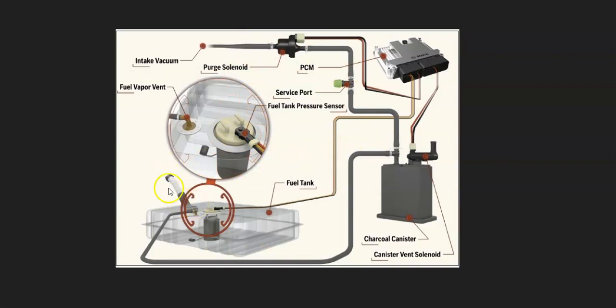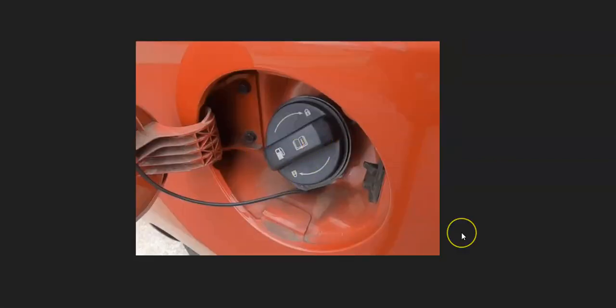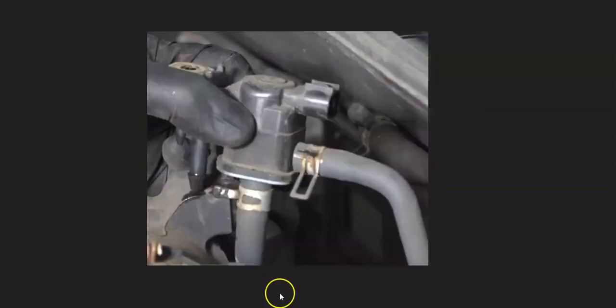The first thing to do with any EVAP code is to go check the gas cap, because the gas cap is part of the EVAP system and if it's not sealing correctly it can cause a leak. Check that it's not cracked and that the inner seal is good. If you do replace it, try to get an OEM original gas cap for your particular Honda, since aftermarket gas caps sometimes don't seal correctly.